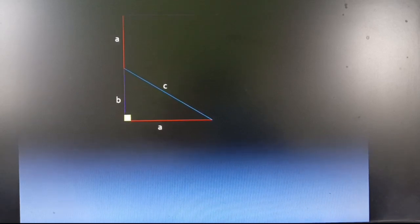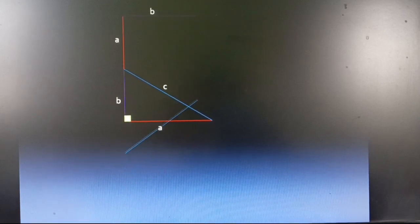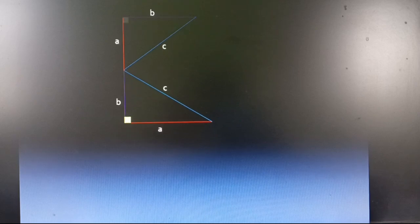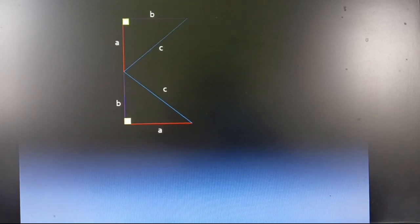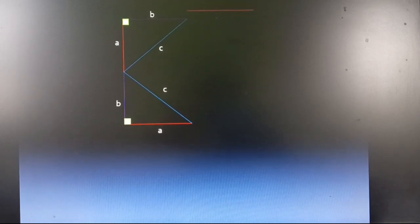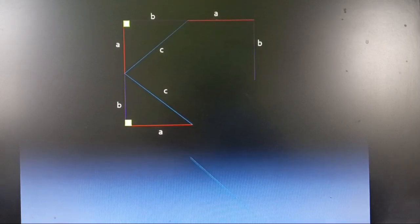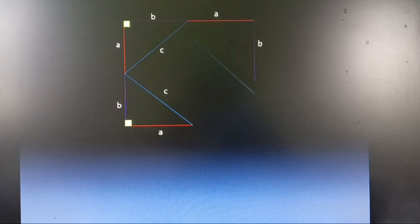We have a right angle triangle whose side lengths are A, B and C. For proving this, we will modify our given figure by drawing 4 similar right angle triangles whose side lengths are A, B and C respectively as shown in this video.